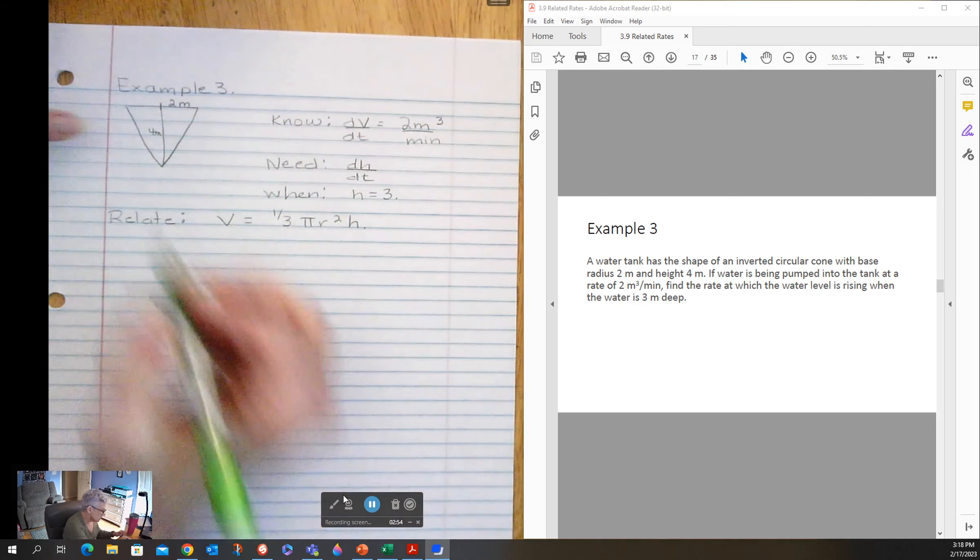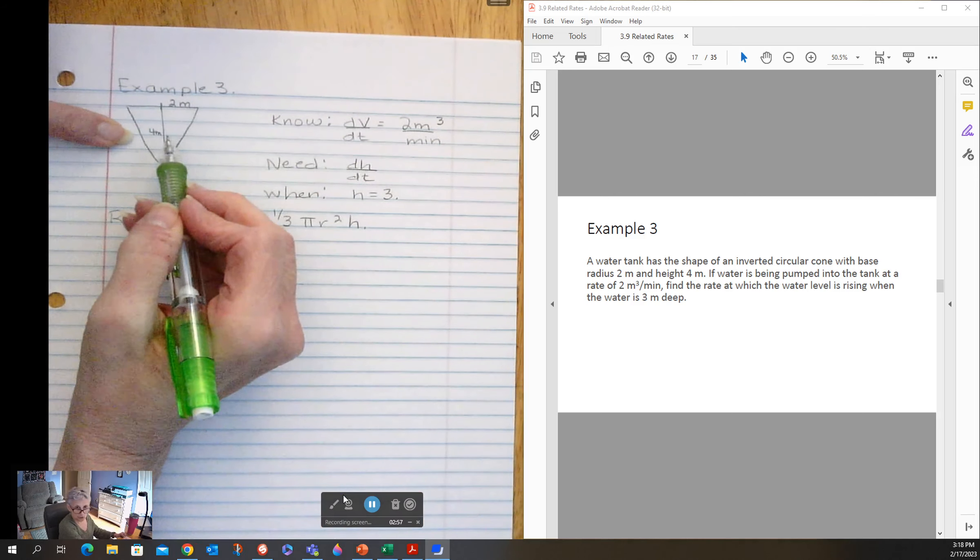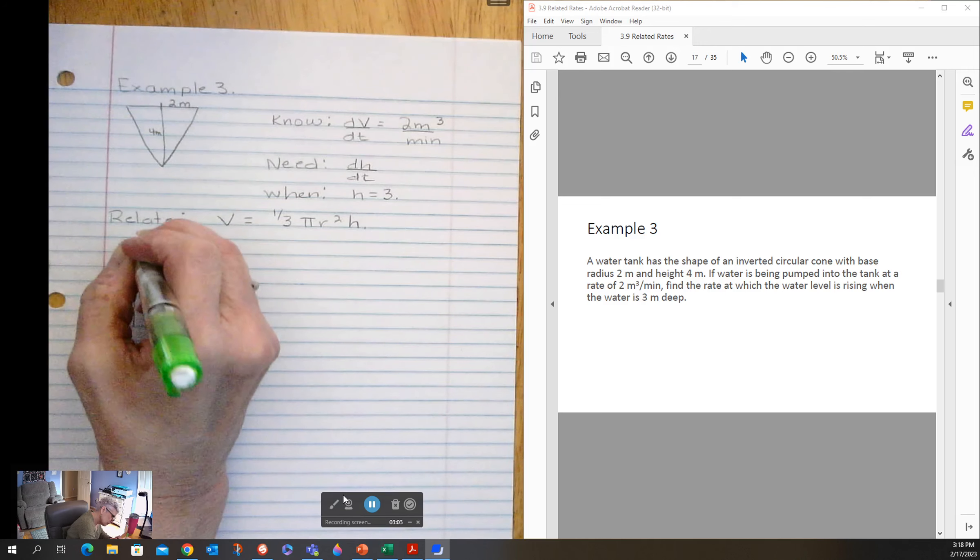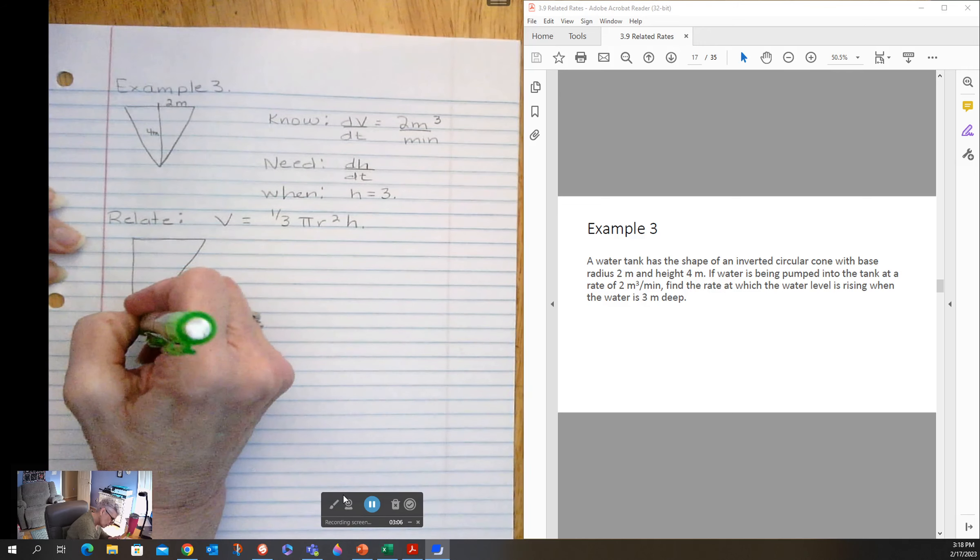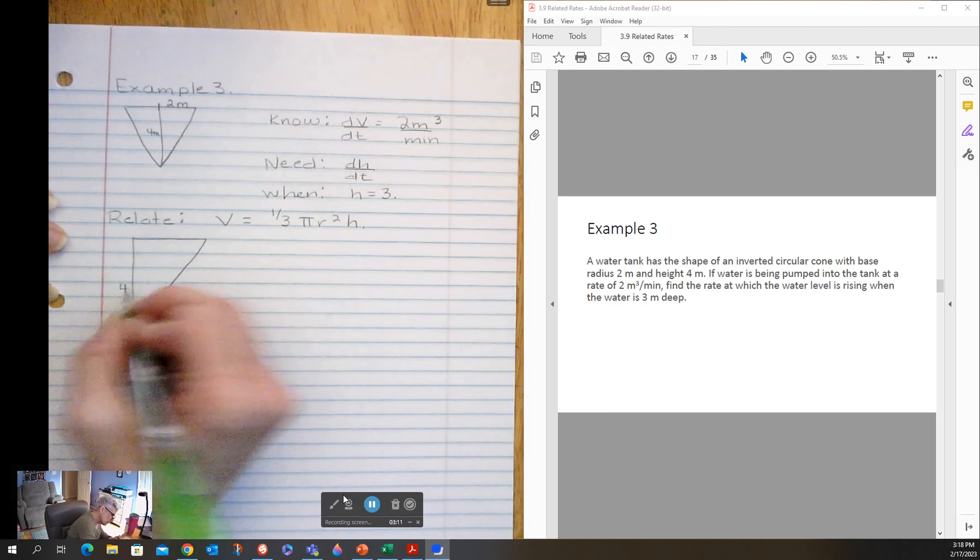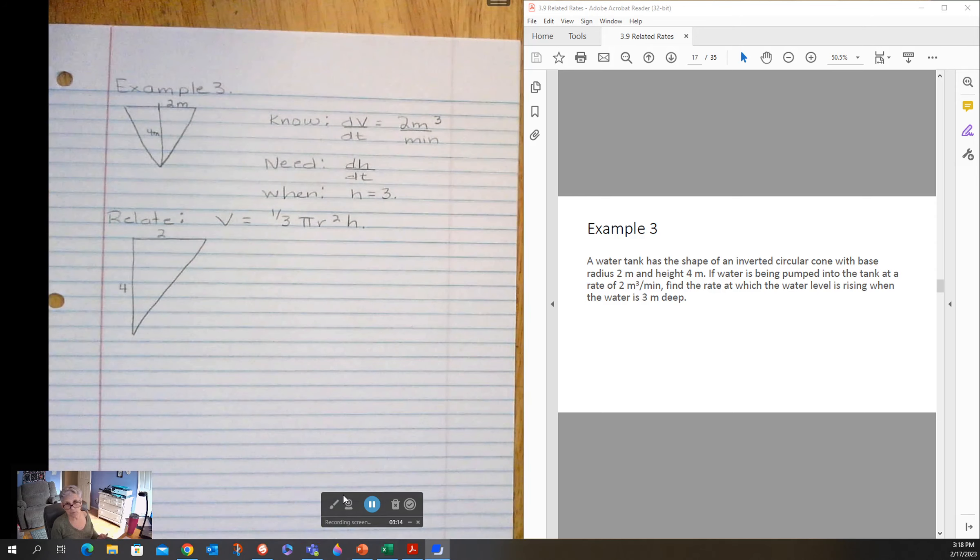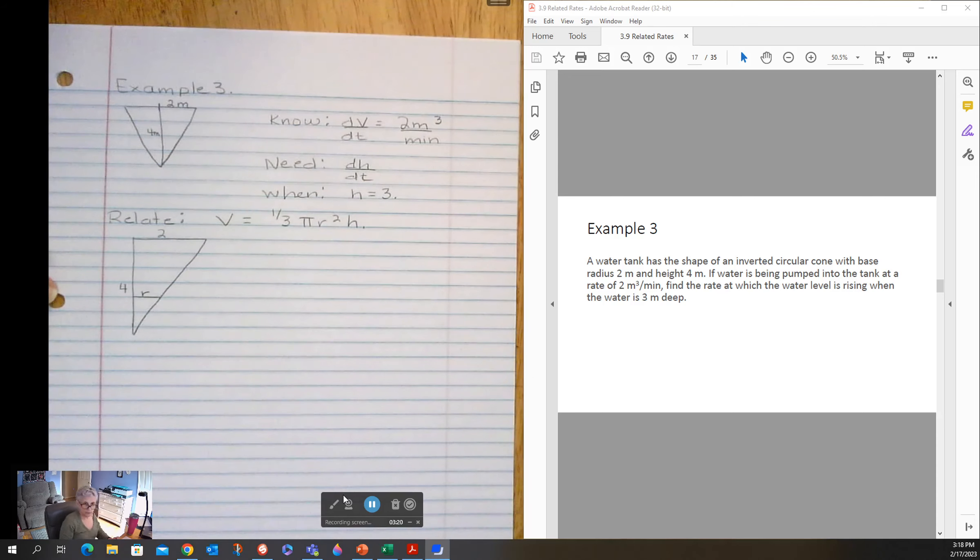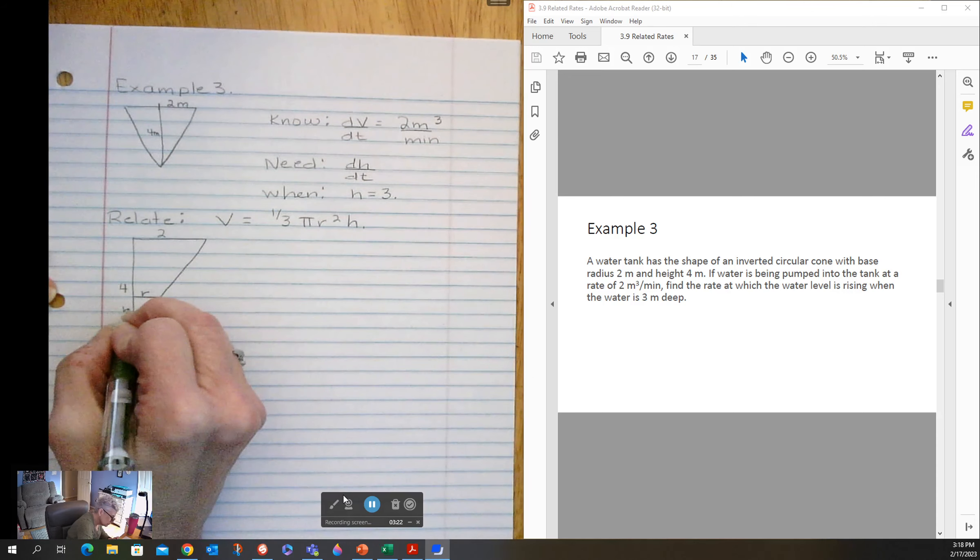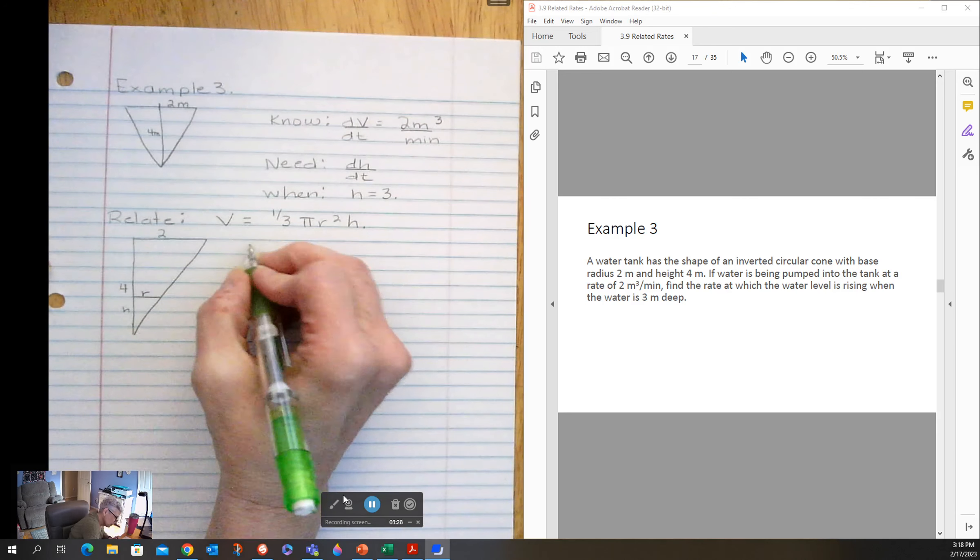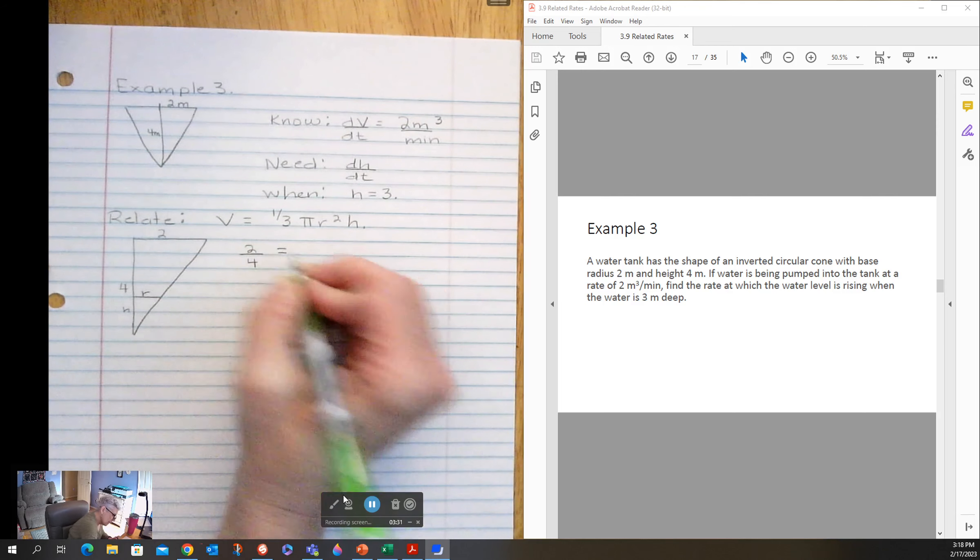So what I'm going to do is look at this triangle I have here, but I'm going to look at just half of it. This triangle is four meters tall and two meters wide. Here's a radius, here's a height. That's a similar triangle. So two over four has to be equal to r over h.